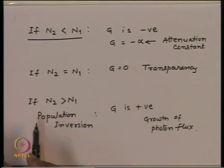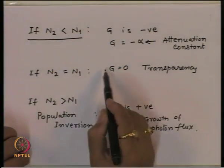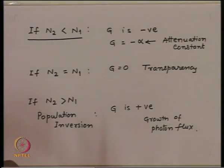If N2 equals N1, then the same number of photons that are incident essentially come out — not that nothing has happened internally; some photons got absorbed, some were emitted. But the net photon flux coming out is the same as the net photon flux impinging on the material. This condition we call the transparency condition, where G equals 0, so photon flux neither grows nor decays when it travels inside the material.